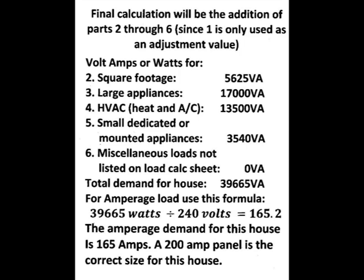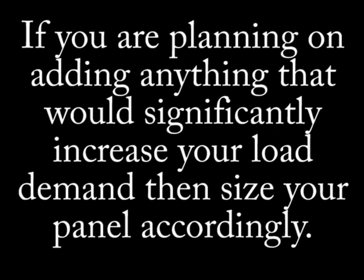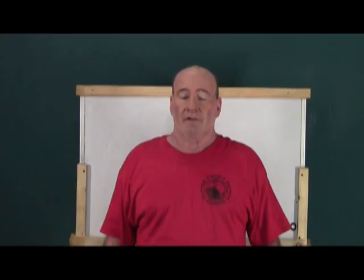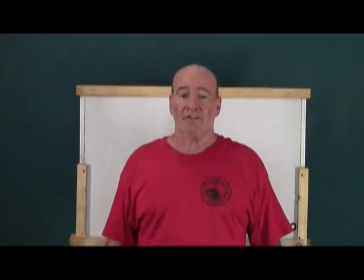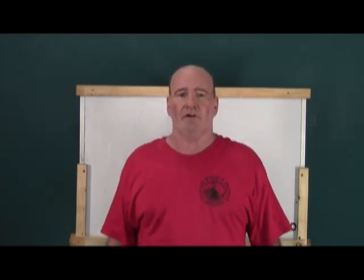For amperage load, use this formula: 39,665 watts divided by 240 volts — that gives you 165.2 amps. The amperage demand for this house is 165 amps. I would recommend a 200 amp panel for the correct size of this house. That basically is how you fill out a load calculation application. That just about wraps up this episode — thanks for watching and have a great day.